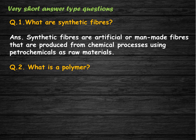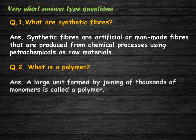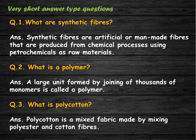What is a polymer? A large unit formed by joining thousands of monomers is called a polymer. What is polycotton? Polycotton is a mixed fabric made by mixing polyester and cotton fibers.